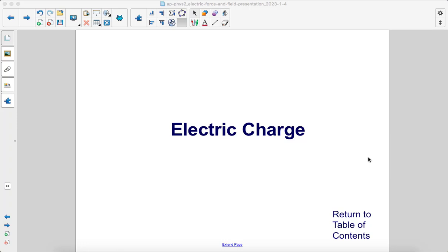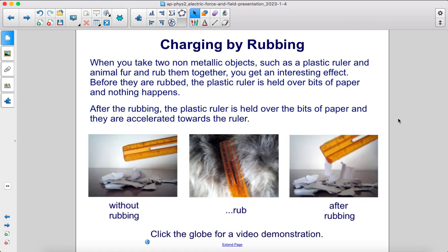Electric charge. When you take two non-metallic objects, such as a plastic ruler and animal fur, and rub them together, you get an interesting effect. Before they're rubbed, the plastic ruler is held over bits of paper and nothing happens.